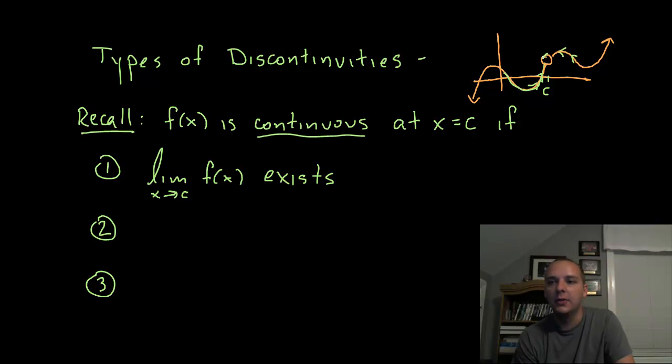Second of all, to avoid having a hole right here and have your point defined somewhere else to where the limit exists but yet it's not continuous, we want to make sure that f(c) exists. Because if there was no point defined at c at all, it would not be continuous clearly.